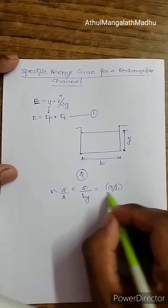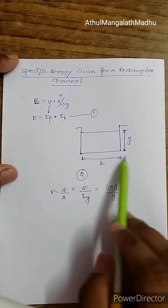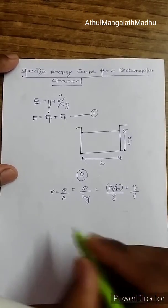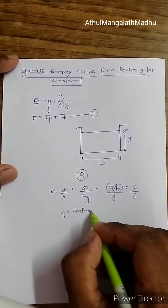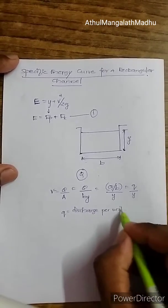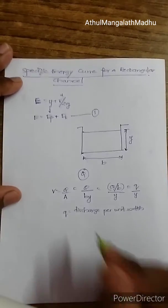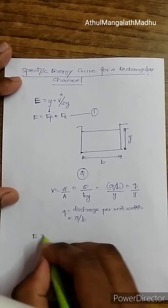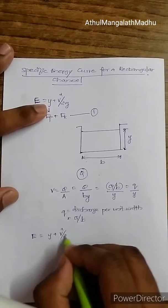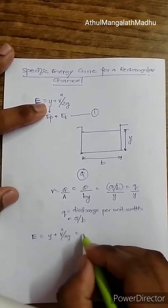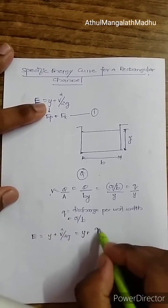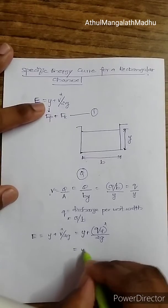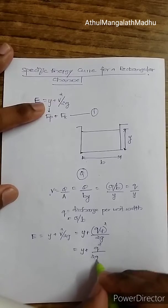I am introducing a new term: discharge per unit width, which is q = Q/b, where Q is the total discharge and b is the width. Substituting into the specific energy equation, E = y + v²/2g, and replacing v with q/y, we get E = y + (q/y)²/2g, which expands to E = y + q²/(2g·y²).